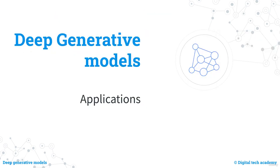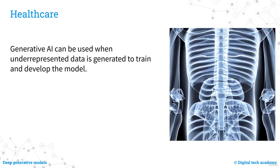In this section, we're going to see some applications for generative models — just a few examples, because the number of applications for this technology is countless. Generative AI can be useful in situations where there is limited data available. For example, it can be used to generate additional views of an X-ray image to help visualise potential tumour growth, and also to detect abnormalities by comparing images of healthy organs with those that are affected.